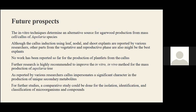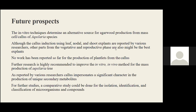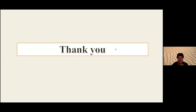For future prospects, in vitro techniques should be used as an alternative source for agarwood production and mass callus of Aquilaria species. Although callus induction using leaf, nodal, and shoot explants is reported, other parts from vegetative and reproductive phases may also be explored and have not been reported so far. Further research is highly recommended to improve individual methods for mass production of the Aquilaria tree. Comparative studies on isolation, identification, and classification of microorganisms could give better insight on plant-microbe interactions.